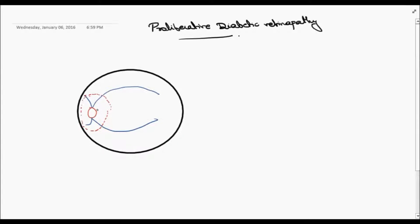This is the presence of neovascularization, new blood vessels within one disc diameter of the optic disc. These new vessels are weak and therefore may bleed.